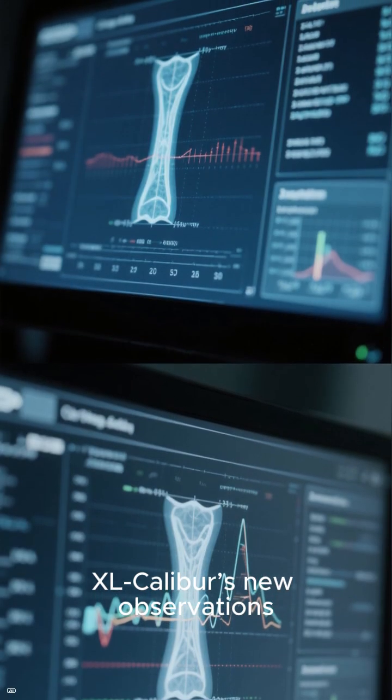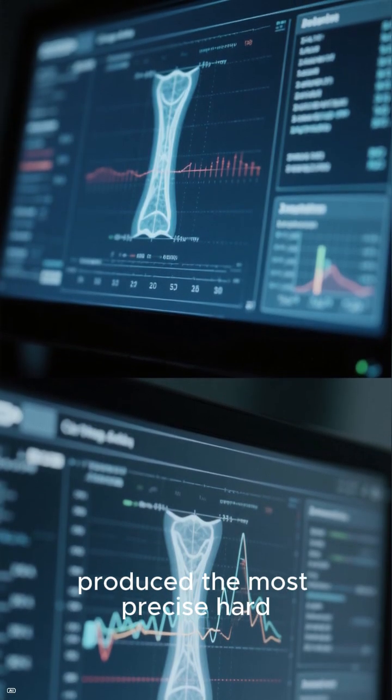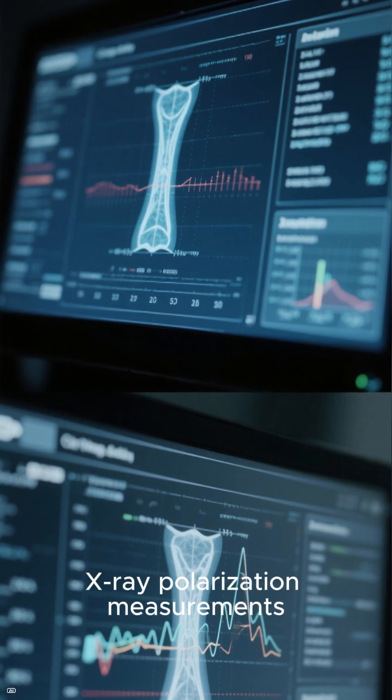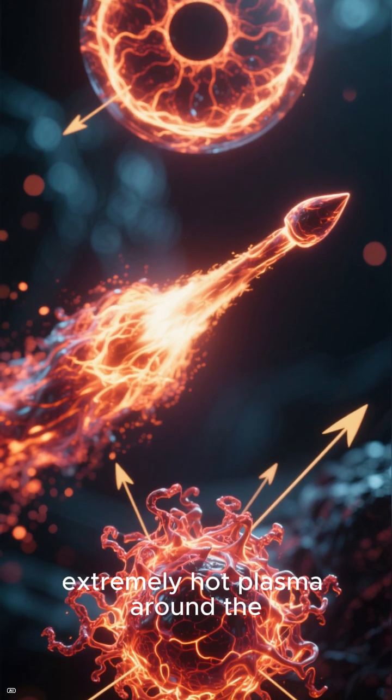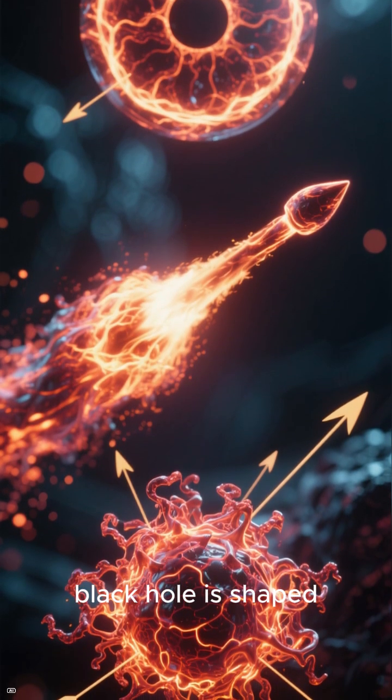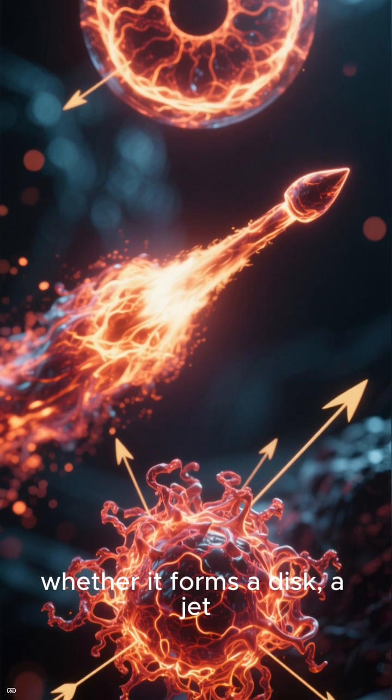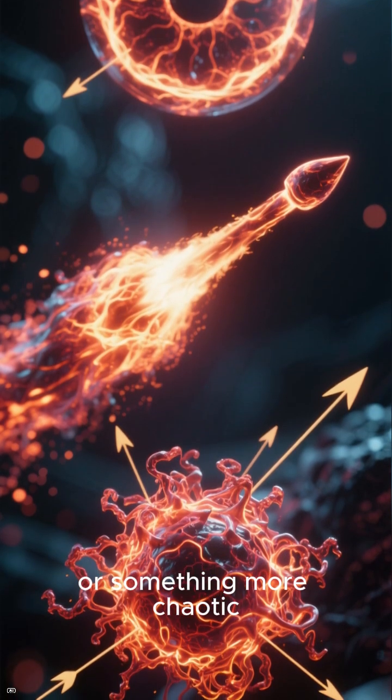X-Caliber's new observations produce the most precise hard X-ray polarization measurements ever made for this system. This tells scientists how the extremely hot plasma around the black hole is shaped, whether it forms a disk, a jet, or something more chaotic.